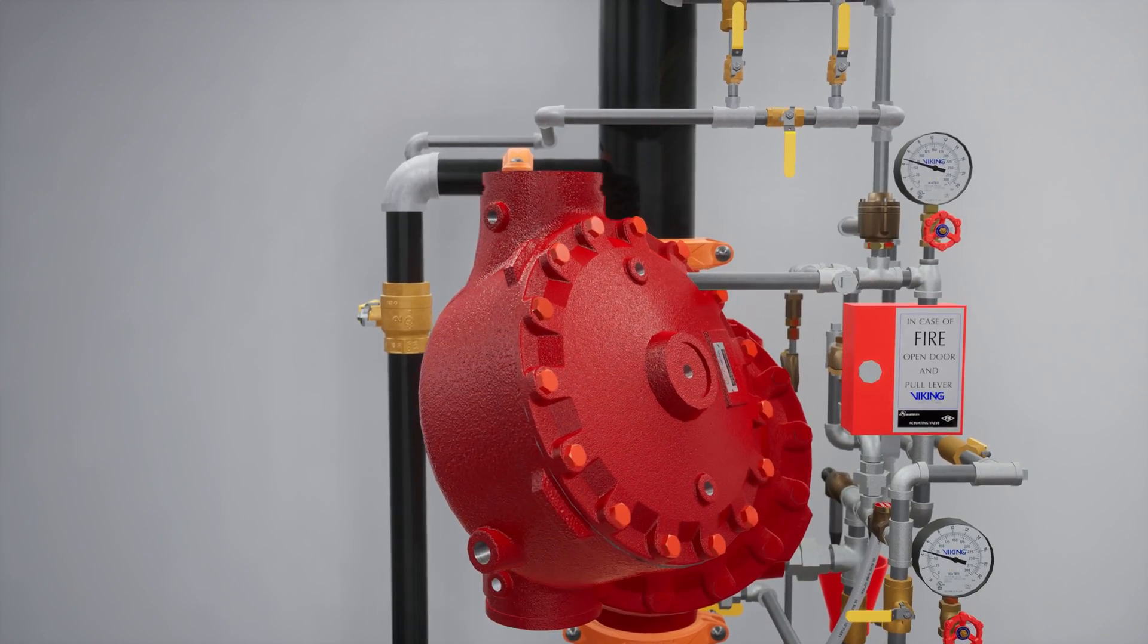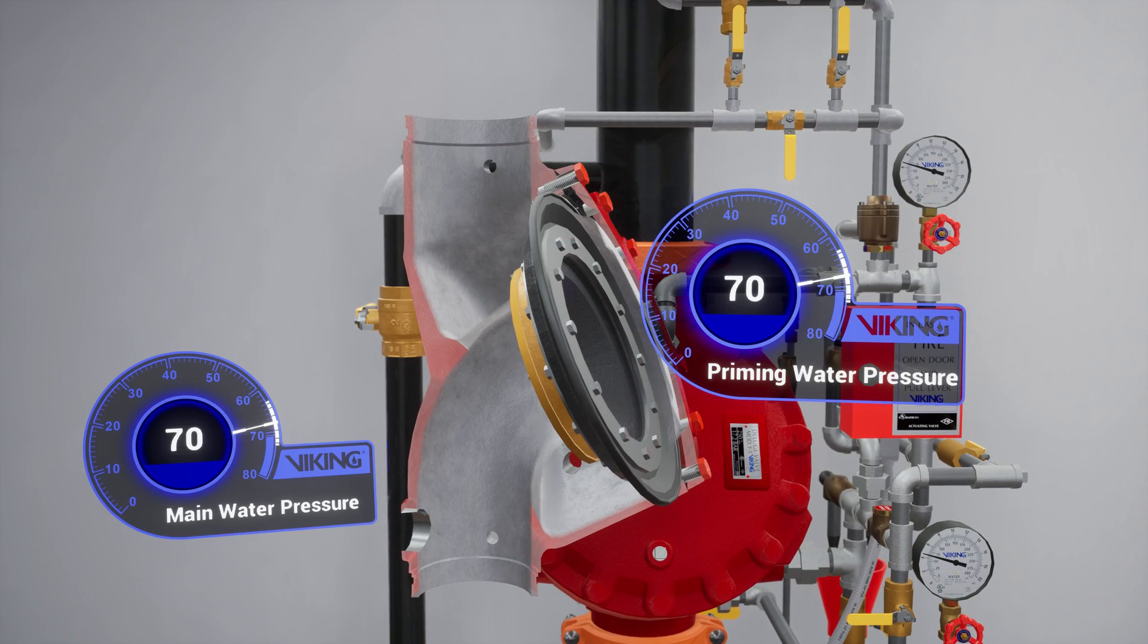The Model F1 Deluge Valve is a quick-opening differential diaphragm flood valve with one moving mechanism. The valve is held closed by system water pressure trapped in the priming chamber, keeping the outlet chamber and system piping empty.